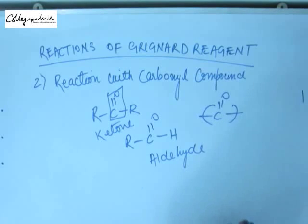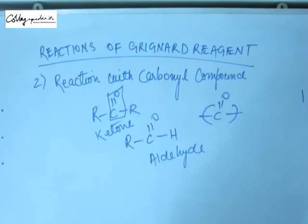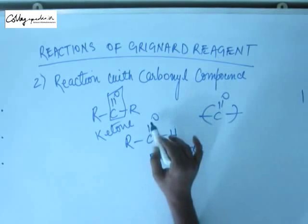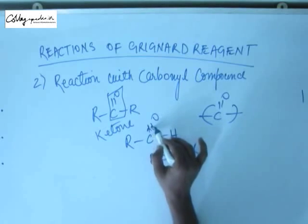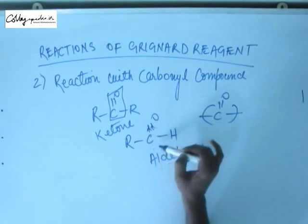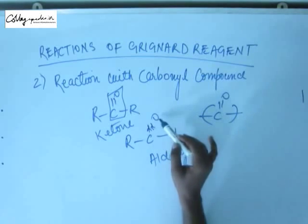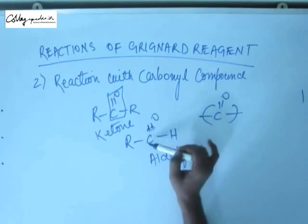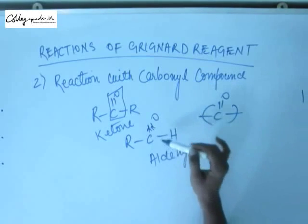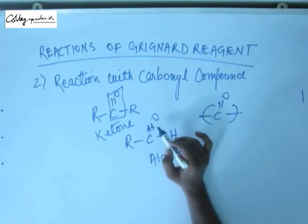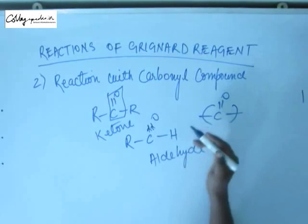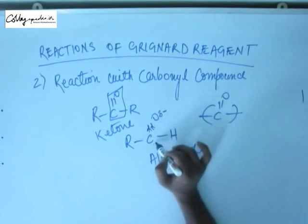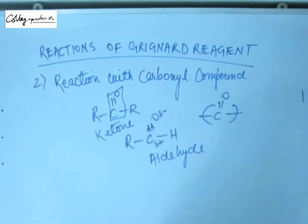Now we study the reaction of Grignard reagent on carbonyl groups. Looking at the carbonyl group, the bond between carbon and oxygen is a polar bond, because there is a huge difference in electronegativity between carbon and oxygen. Oxygen is the second most electronegative element; carbon is among the least electronegative. Due to this electronegativity difference, electron density shifts toward oxygen, giving oxygen a δ⁻ charge and carbon a δ⁺ charge.